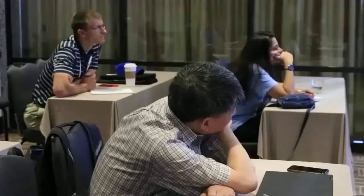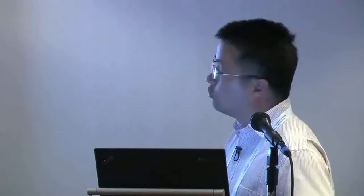The other way is to fix the data rate and then find the power to achieve that data rate. Since R is fixed, maximizing R over P is the same as maximizing R over the minimum P given R — that means we only need to allocate this amount of power to achieve that data rate. This is the inverse of the spectrum efficiency capacity. So this is another way of achieving energy capacity: first use capacity-approaching coding and then adapt the rate. These two approaches are obviously equivalent, and in the following we will use them interchangeably.